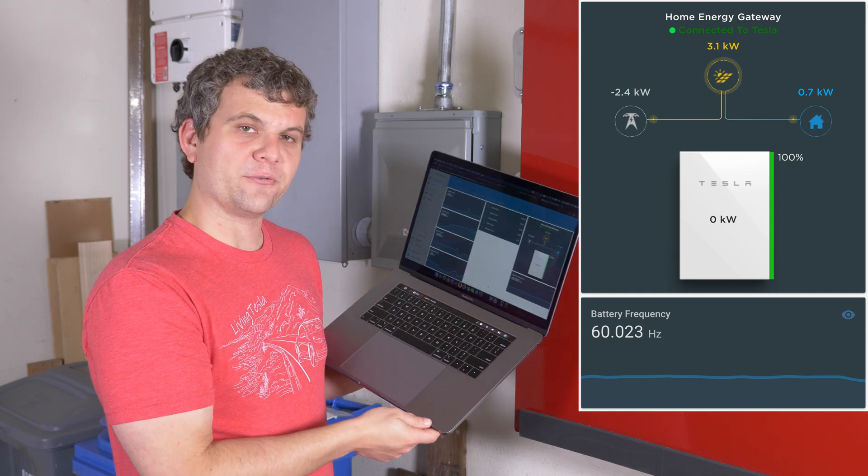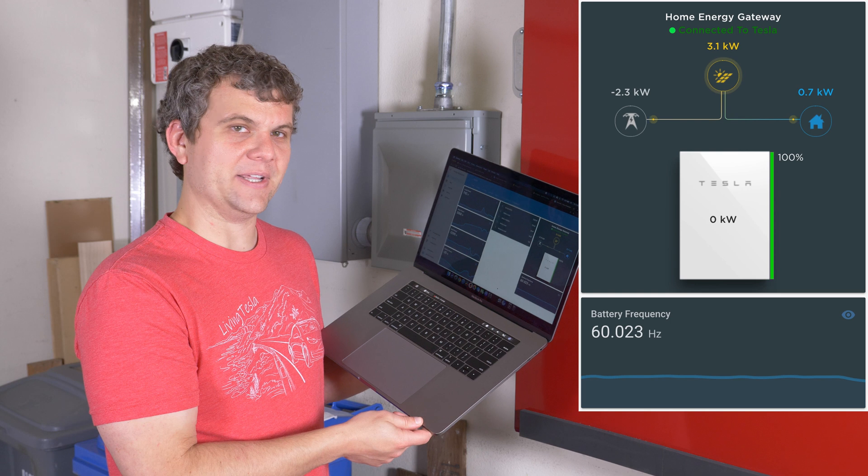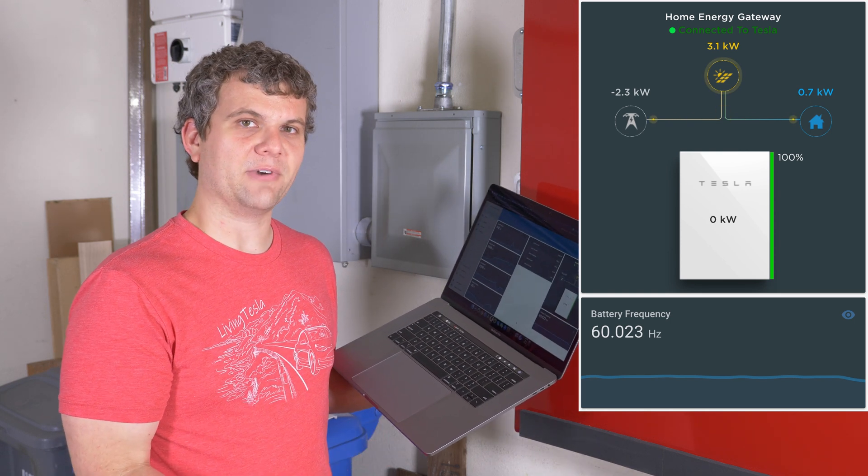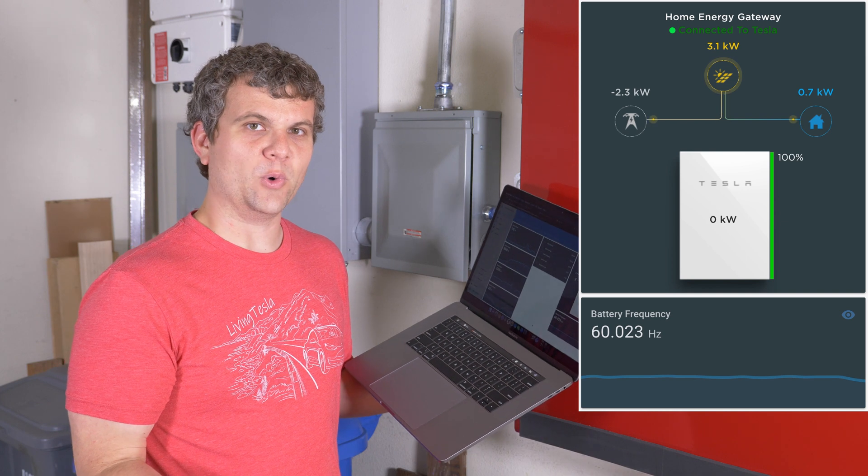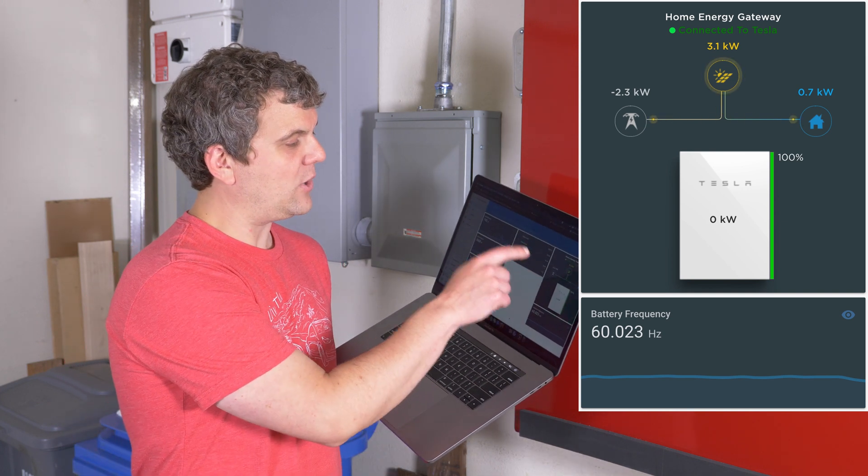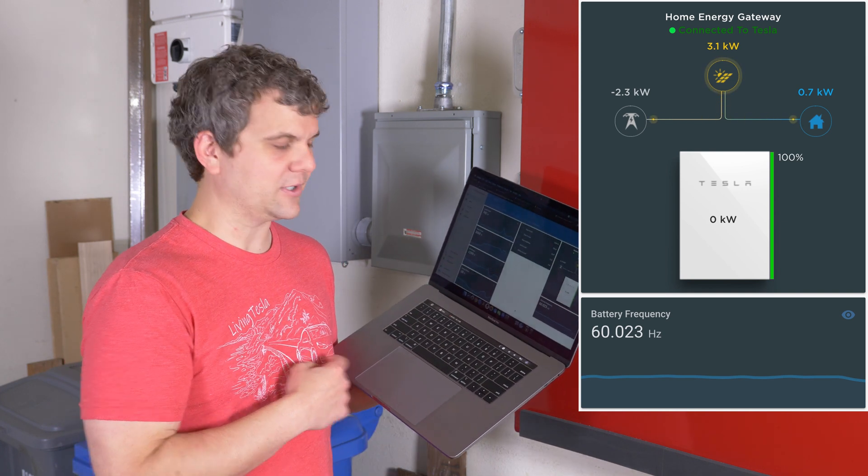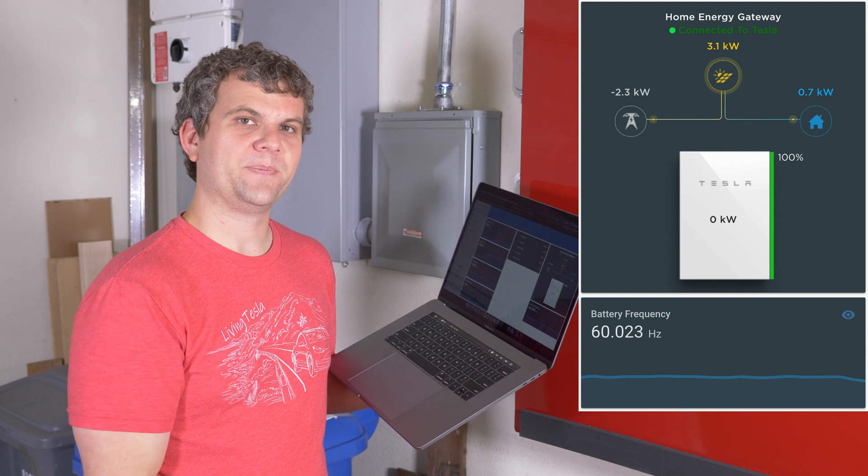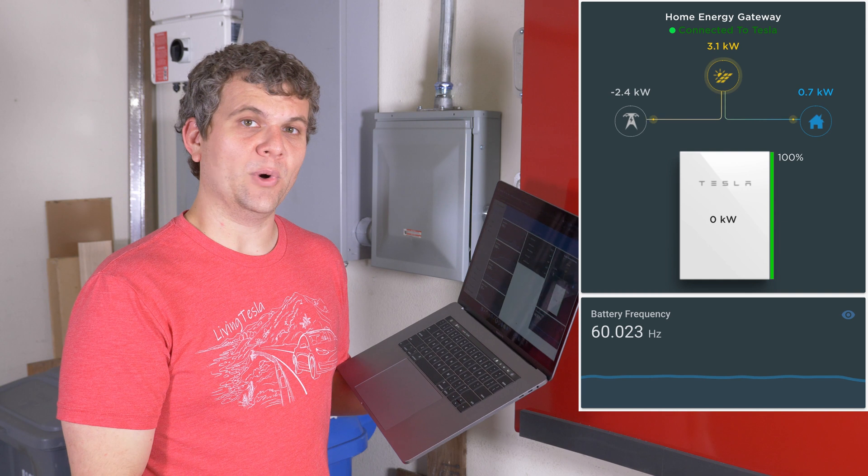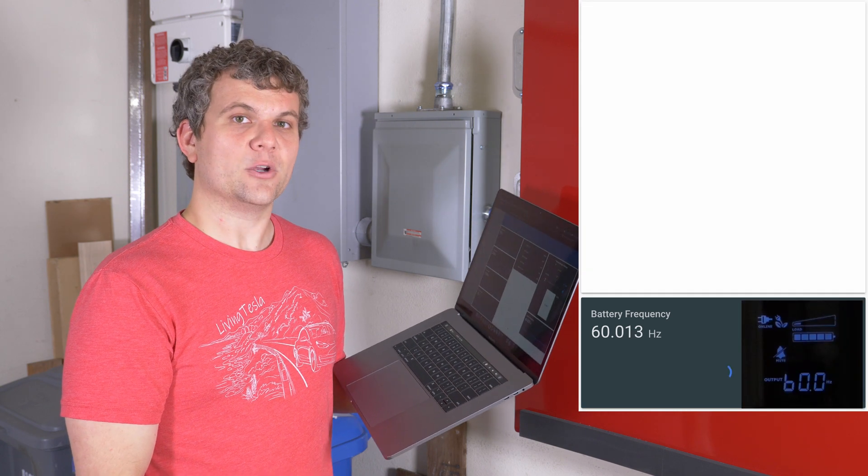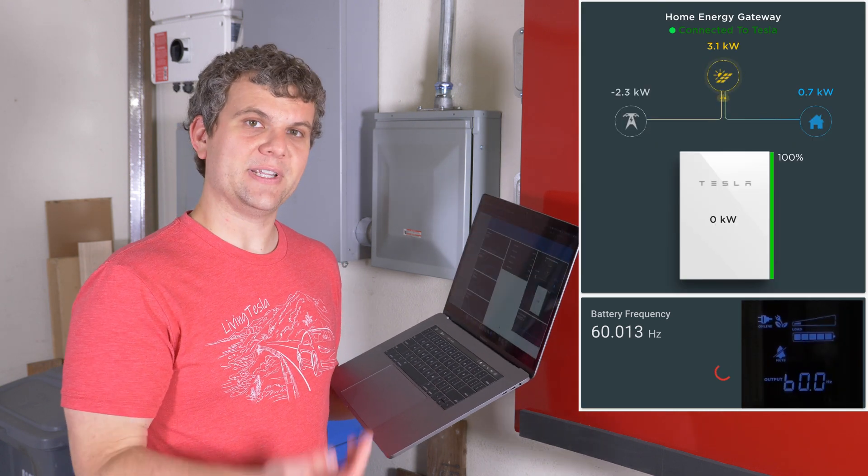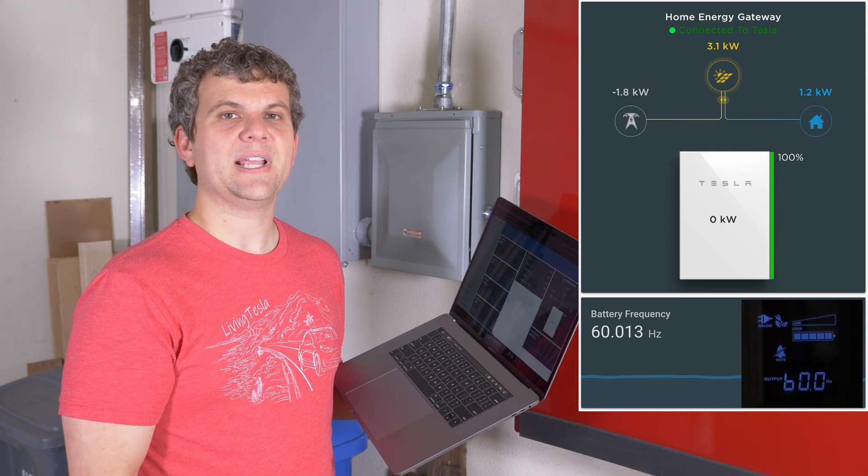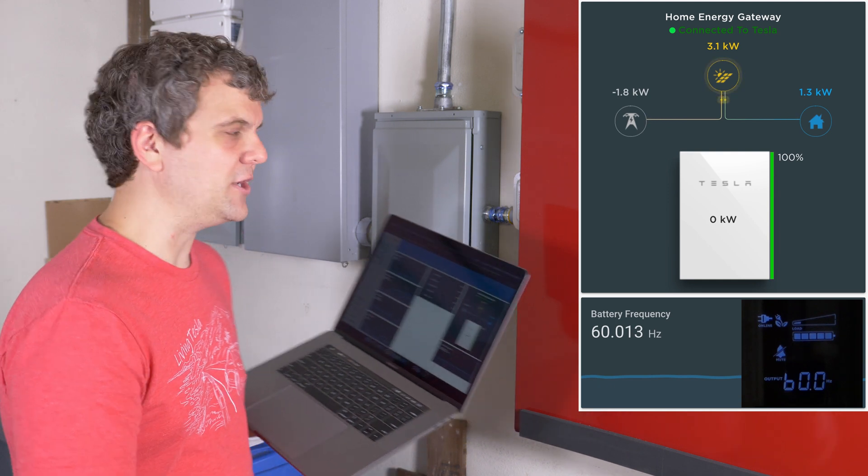We're sending 2.3 kilowatts back out to the grid. So this is a situation where if we lost the grid right now, power has nowhere to go. The Powerwall is going to shut down the solar. So we're expecting this battery frequency to go up. Now, I also have the camera pointed at the UPS so we can see what it's doing. It should stay online and we should see its frequency only go to 62 instead of 65. So let's do it.